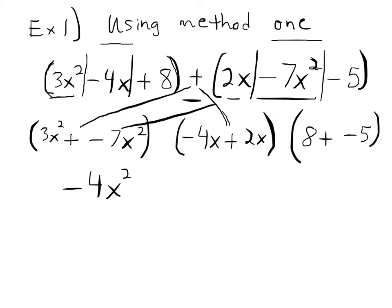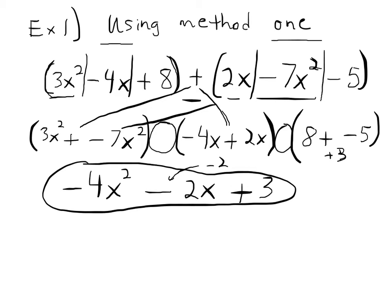I didn't put signs in between these because we don't know whether it's positive or negative until we determine the result. So negative 4 plus 2 gives me negative 2, so negative 2x. And then 8 plus negative 5 gives me a positive 3, so plus 3. This is my simplified answer, and I know that because there are no more like terms. You have x squared, x to the first, and then just a constant — that's how I know this is my final answer. You just added two polynomials! If you have questions, hit pause now and write out your exact question. Otherwise, let's go on to the next example.